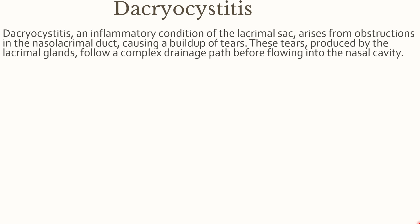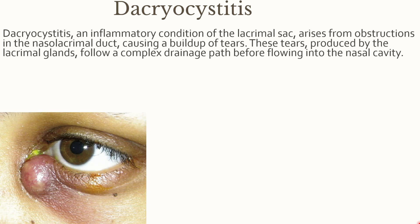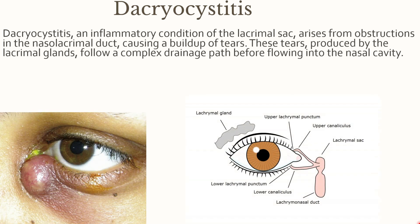As we know, tears are produced by the lacrimal glands, collected into puncta. It drains into canaliculi and then through the lacrimal sac and lacrimal duct before draining into the nasal cavity.